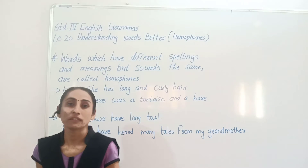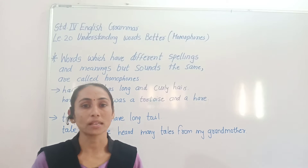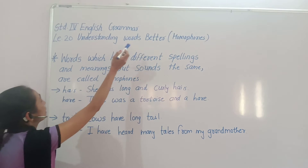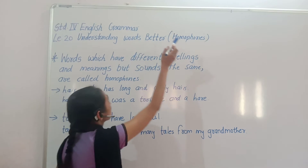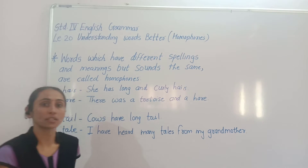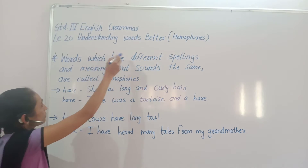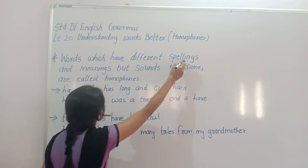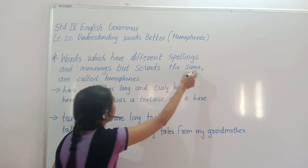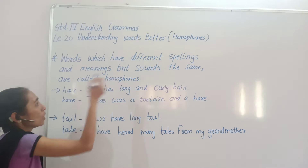Hello students, today we learn Standard 4th English Term, Lesson number 20: Understanding Words Better — that is homophones. Now, what are homophones? Words which have different spellings and meanings but sound the same are called homophones.